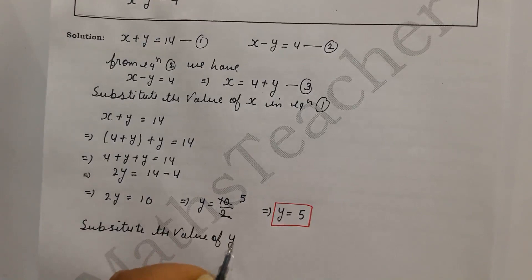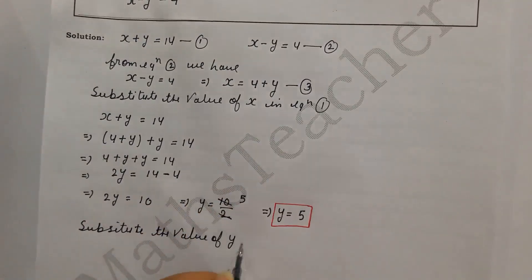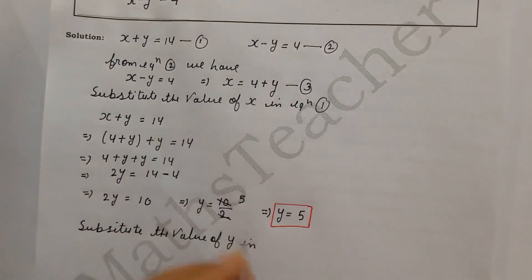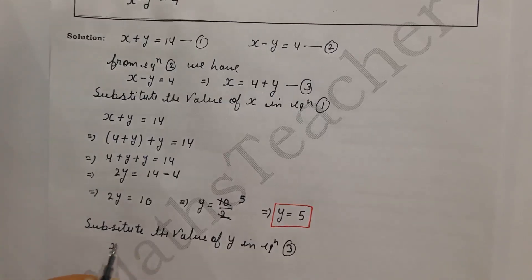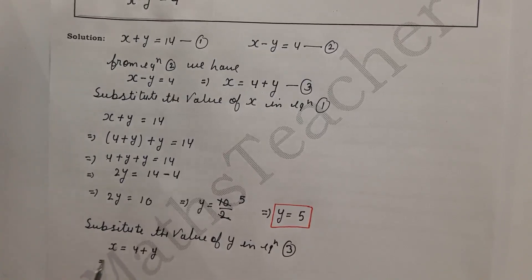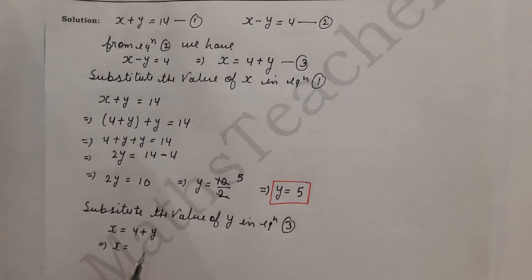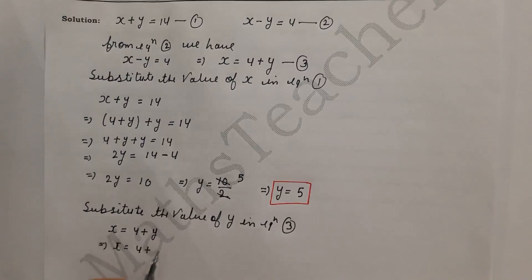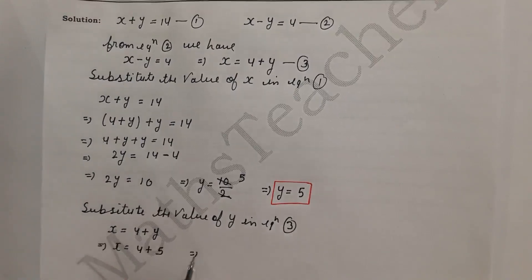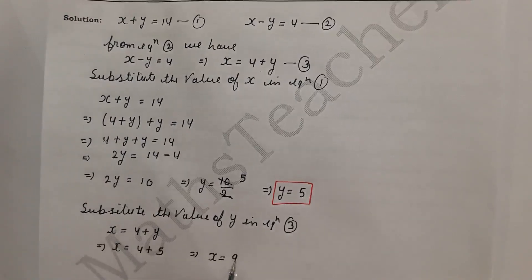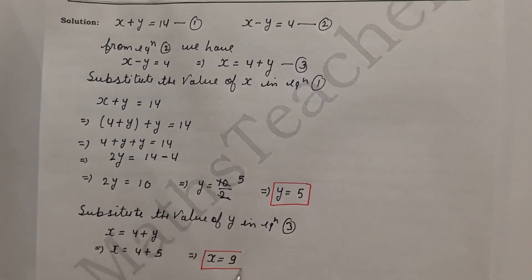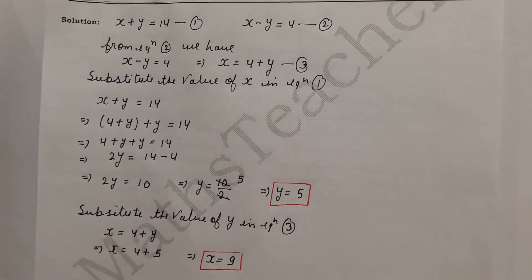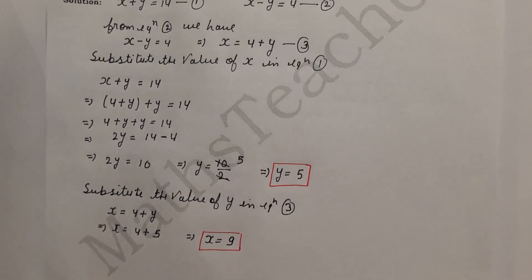Now we substitute the value of y into equation no. 3, which is x equals 4 plus y. Substituting y equals 5, we get x equals 4 plus 5, which implies x equals 9. So x equals 9 and y equals 5 — these are both values found by substitution.